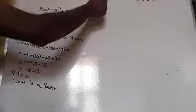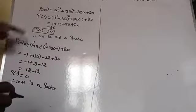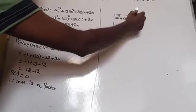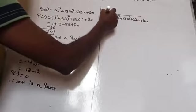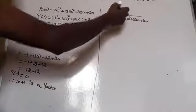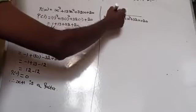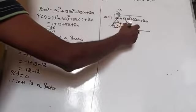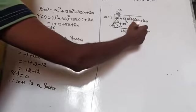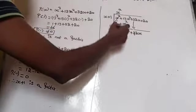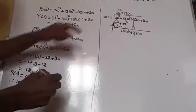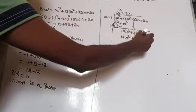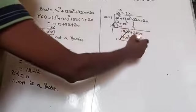By using the long division method, divide x³ + 13x² + 32x + 20 by (x + 1). x³ ÷ x = x², and x²(x + 1) = x³ + x². Change sign: 13x² - x² = 12x². Bring down 32x. Then 12x² ÷ x = 12x, and 12x(x + 1) = 12x² + 12x. Change sign: 32x - 12x = 20x.